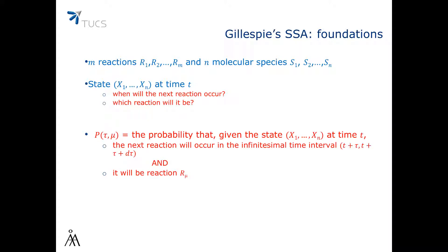We combine the answers to these two questions in the following joint probability distribution. P of tau and mu is going to be the probability that, given the state X1 through Xn at time t, the next reaction will occur in the infinitesimal time interval from t plus tau to t plus tau plus d-tau, and it will be reaction R_mu.